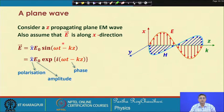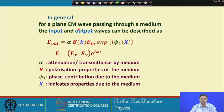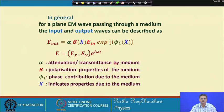In general we start with a simple plane electromagnetic wave propagating along the z direction with polarization along x. For a plane wave passing through a medium of finite travel length L, the input and output waves can be described as e_out = alpha * B(x) * e_in * exp(i*phi_1). Here alpha is the attenuation or transmittance by the medium, B is the polarization properties of the medium, and phi_1 is the phase contribution due to the medium.